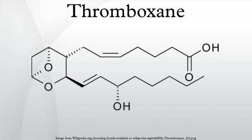Production: Thromboxane A synthase, an enzyme found in platelets, converts the arachidonic acid-derivative prostaglandin H2 to thromboxane. Mechanism: Thromboxane acts by binding to any of the thromboxane receptors, G-protein-coupled receptors coupled to the G-protein Gq.